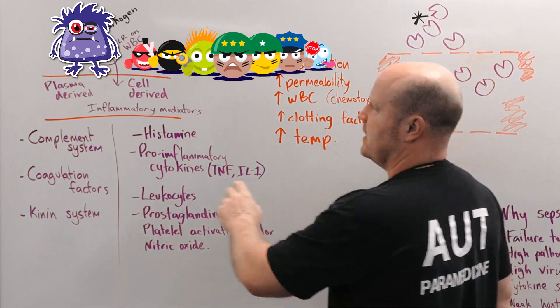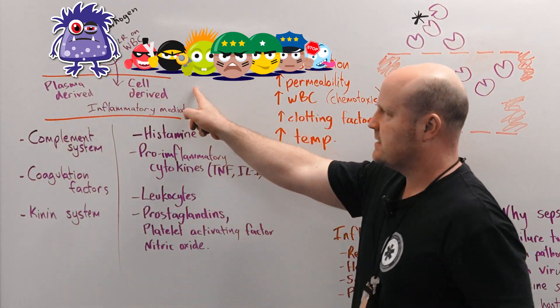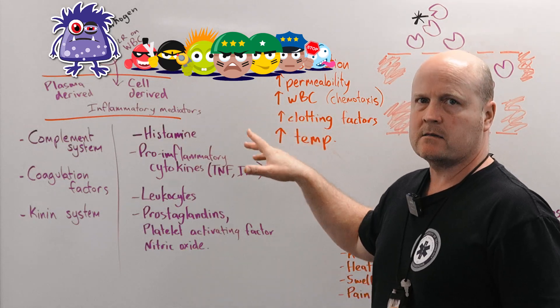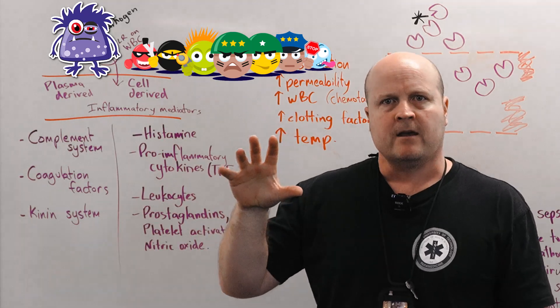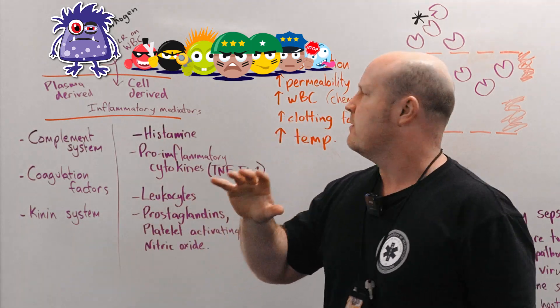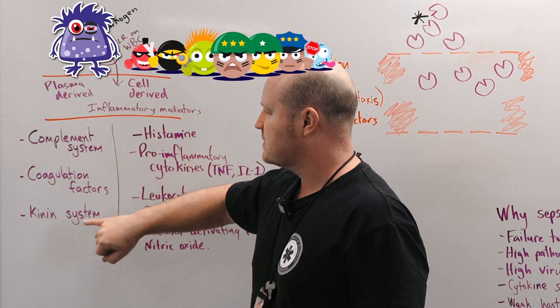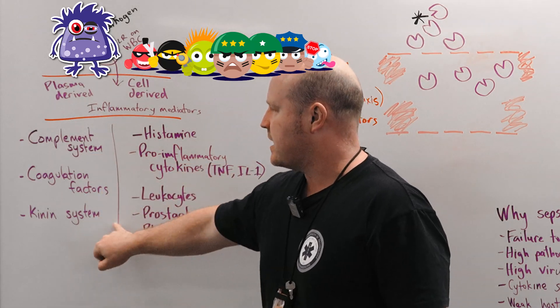The way they do this is we've got plasma-derived and cell-derived inflammatory mediators. So in the plasma which is just the watery bit of our blood, we have the complement system, coagulation factors, and the kinin system.